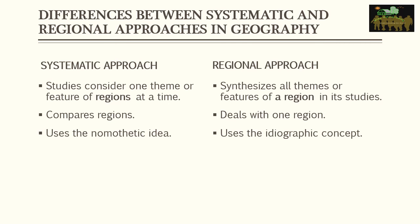The regional approach doesn't focus on a particular feature and doesn't go into as much detail, but it studies everything about the region — all the themes. To study a region, you look at population, climate, settlements, and everything about it. The systematic approach breaks it down and looks at what goes into each feature. A second difference: the systematic approach compares regions, while the regional approach deals with one region at a time — studying everything about that one region.